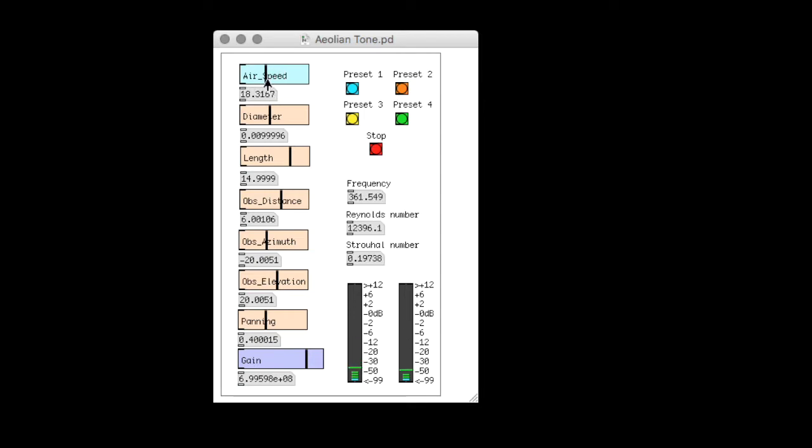The equations that have been identified relate the airspeed and cylinder diameter, which gives the frequency of the tone. The gain is calculated from the length, distance between source and observer, as well as the azimuth and elevation angles.